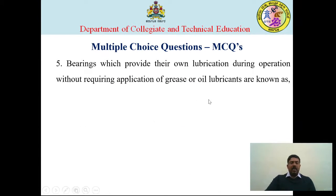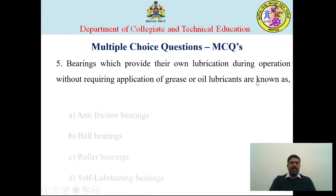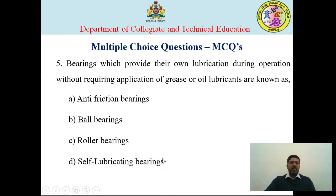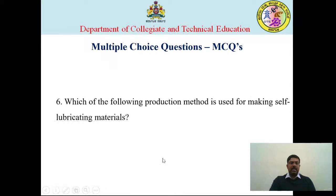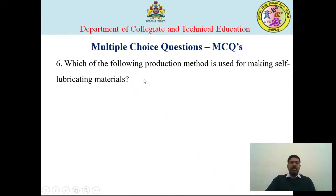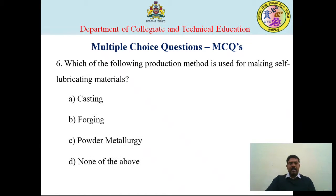Question five: bearings which provide their own lubrication during operation without grease and oil are known as self-lubricating bearings, so option A is correct. The last question: which production method is used for making self-lubricating materials? Powder metallurgy is the best production method for producing self-lubricated bearings, so option C is the correct answer.